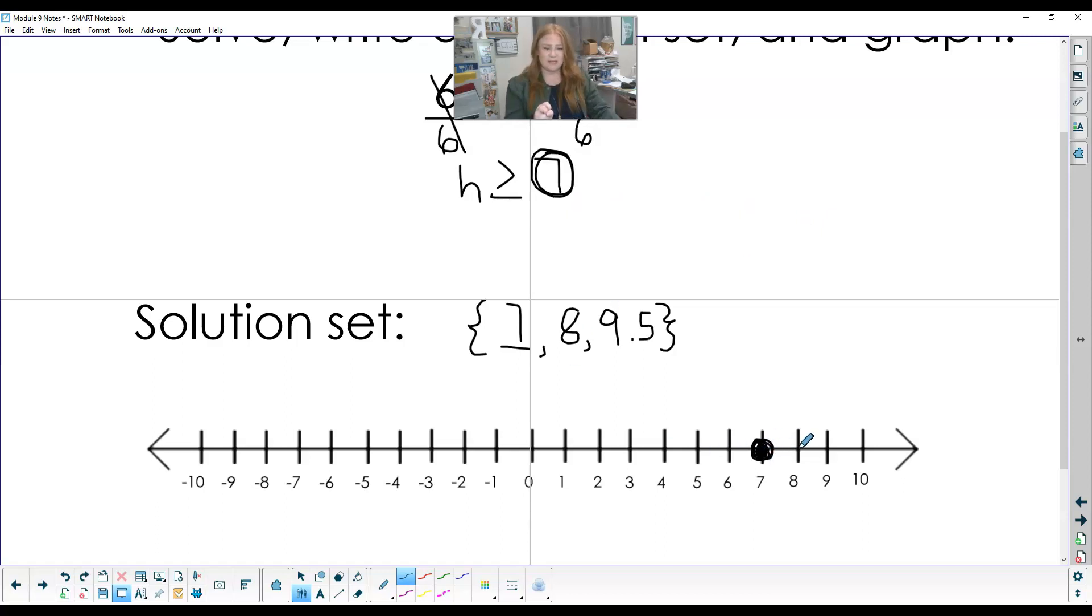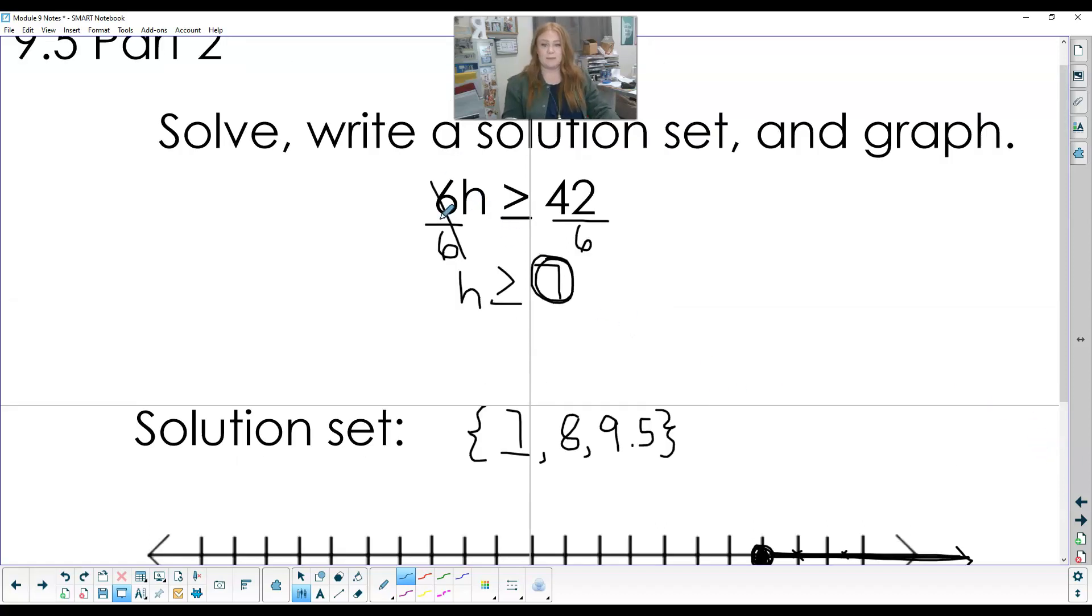So I mark my solution set, and then I make my arrow go that same direction. So anything this way, 7 or bigger, that way, on my number line is a solution to this problem. 6H is greater than or equal to 42.